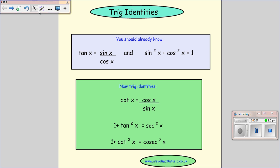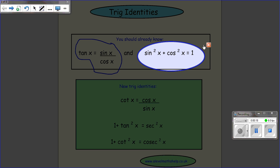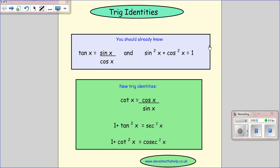Now hopefully you're already confident and happy with the fact that tan x equals sin x over cos x and sin squared x plus cos squared x equals 1, which is a very, very important trig identity. You really, really need to know it.